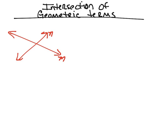We're going to move on to looking at intersections of geometric terms. First thing we have here are two lines — line M and line N. Notice this time I've described those two lines using the small subscript letters. When we're talking about two lines and they intersect, they're always going to intersect at a specific point. I'm going to call this point A, and because it's a point, we use the capital letter A.